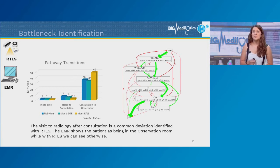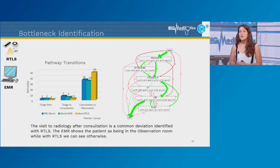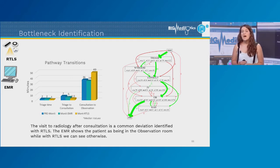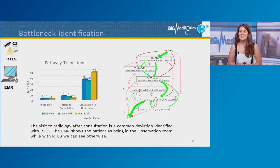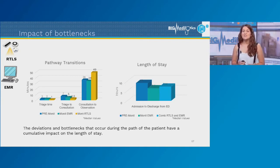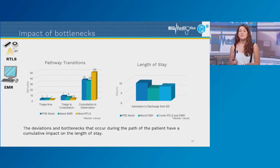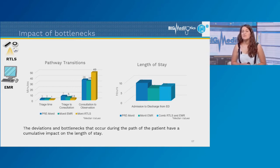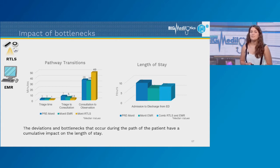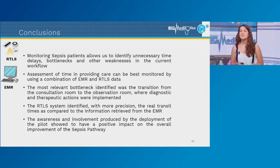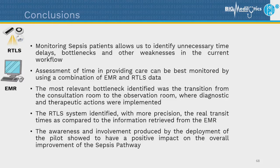Confronting the main results, we see a positive trend showing improvement after the deployment of RTLS. RTLS data also reveals a significant increase in transition time from consultation to observation that is not shown in the EMR data. Looking back at the initial paths from RTLS data, the common deviation is a visit to radiology before moving to the observation area — this visit to radiology is causing the increased transfer time and would not have been easily detected without RTLS. Deviations during the patient's ED pathway impact total length of stay, but even before RTLS installation a clear improvement is observable.